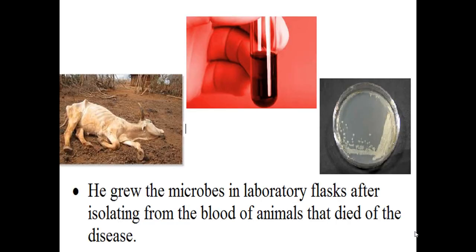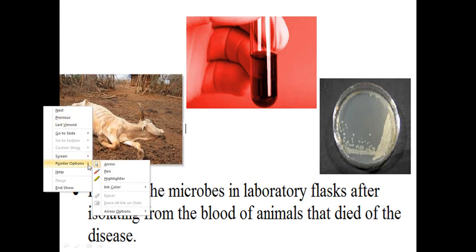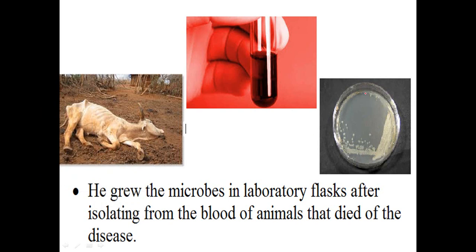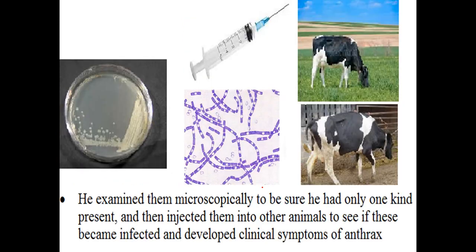What he actually did was isolate the bacteria from the blood of the diseased animal. You can see this is the bacteria in the petri plate, this is the blood, and this is the cattle. He took out the blood from the cattle and inoculated it into a culture medium, growing the Bacillus anthracis in culture.